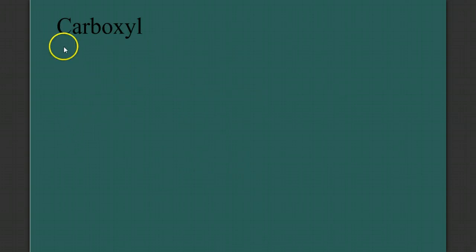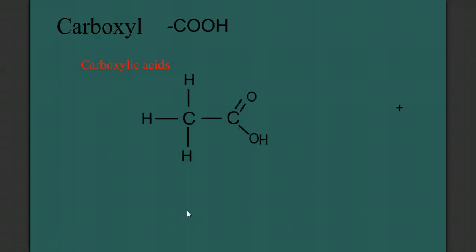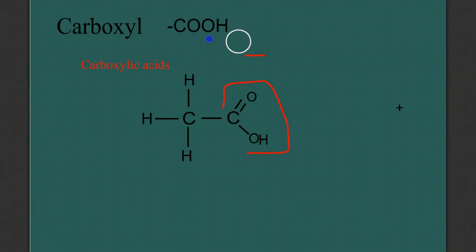Our next functional group is the carboxyl group. A carboxyl group is written as COOH, which may seem unusual — we'll see why in just a minute when we draw it. It makes up a class of molecules called the carboxylic acids. When we look at the structural diagram, we see why we don't just write this as CO2H — that would be deceiving as to the structure, because it's really C double bond O bond OH. It is this whole structure that is the functional group. Sometimes people mistake this for two different functional groups, but this entire structure is the carboxyl group.